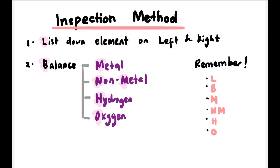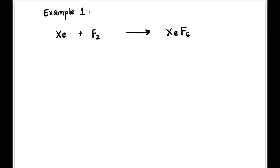This is what we usually do in school. The first step is you must list down all the elements on the left and right hand side of the equation, and then we start to balance. You have to balance starting from metal, then non-metal, then hydrogen, then oxygen. Just remember the mnemonic: lb mnm ho.